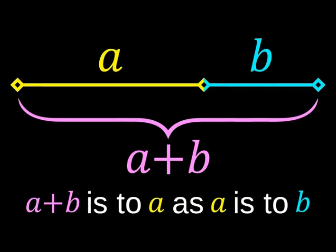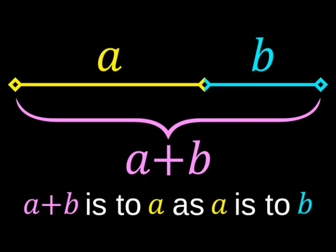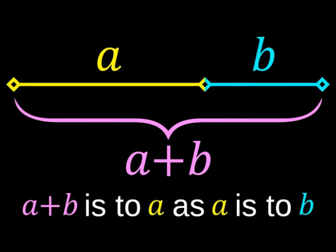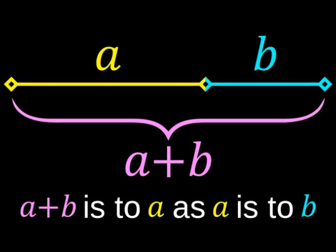For example, if A is the longer part and B is the shorter part, then A plus B is to A, as A is to B.